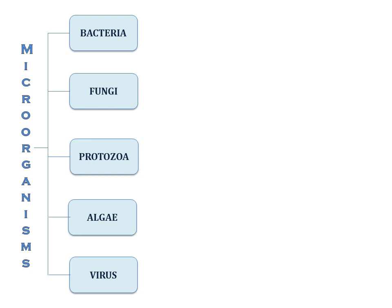Microorganisms can be classified into five groups, namely bacteria, fungi, protozoa, algae, and virus. Now let's study each of these groups briefly.